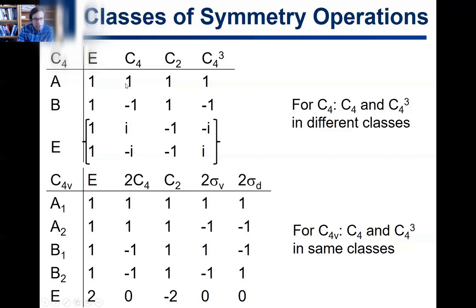This is a very peculiar thing: for the C4 point group, the C4 operation is in a separate class from C4³. What is C4³? That's C4 times C4 times C4 — meaning you've done a C4 rotation three times, so you've done a 90-degree rotation three times.